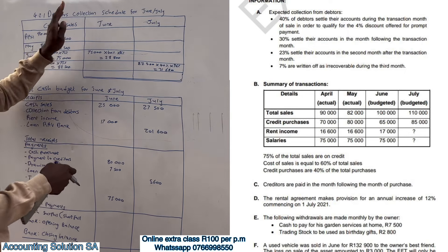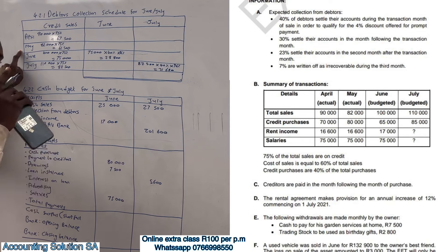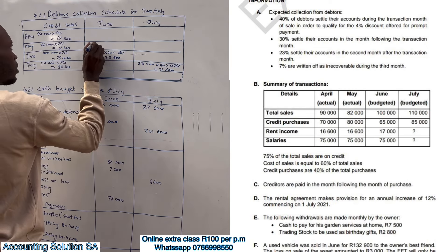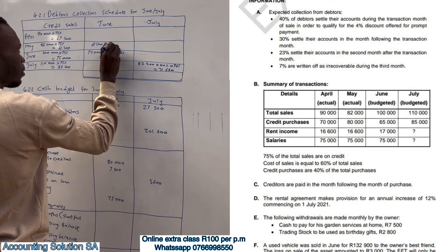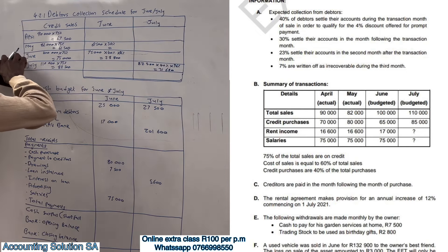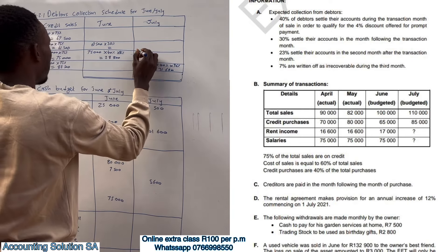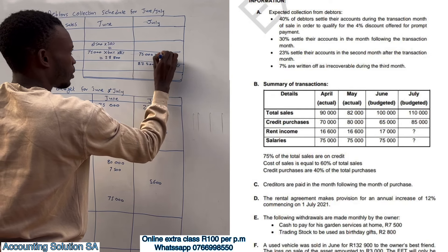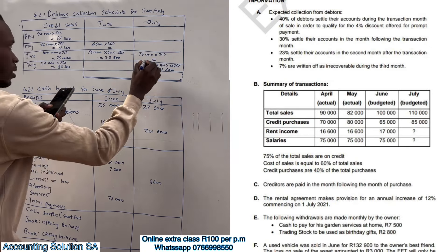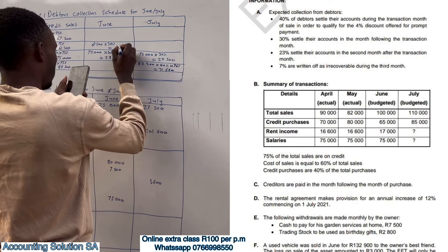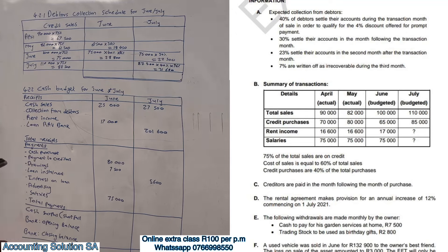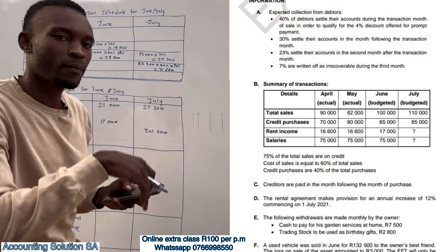For the following month: April's following month is May which we don't need here. May's following month is June — they meet here — and the percentage is 30%. So: 61,500 multiplied by 30%, no discount, gives 18,450. June's following month is July — they meet here — so 75,000 multiplied by 30% gives 22,500.